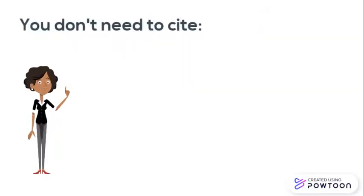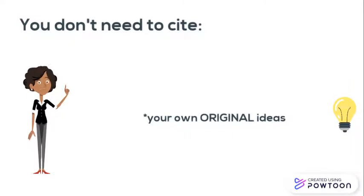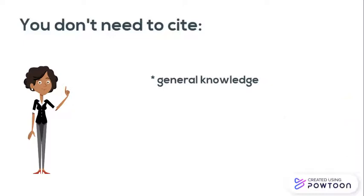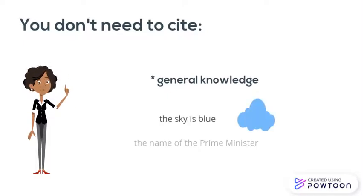So, you may be asking yourself: do I have to cite every word in my paper? Fortunately not. You don't have to cite your own original ideas. You also don't have to cite statements of general knowledge. General knowledge is defined as the type of facts that you can expect the average person to know, such as the sky is blue, or the name of the Prime Minister.